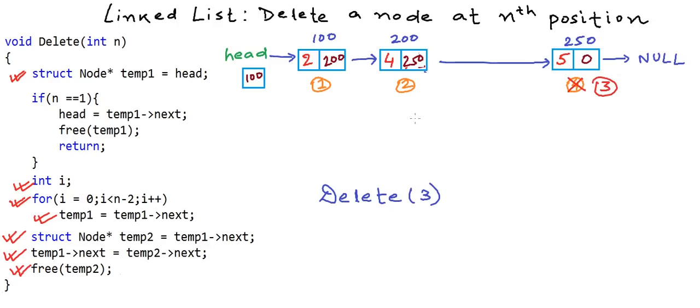This was deleting a node at a particular position in the linked list. We can also have a problem where we want to delete a node with a particular value — you can try implementing that. In the coming lessons we will see more problems on linked lists. Thanks for watching.